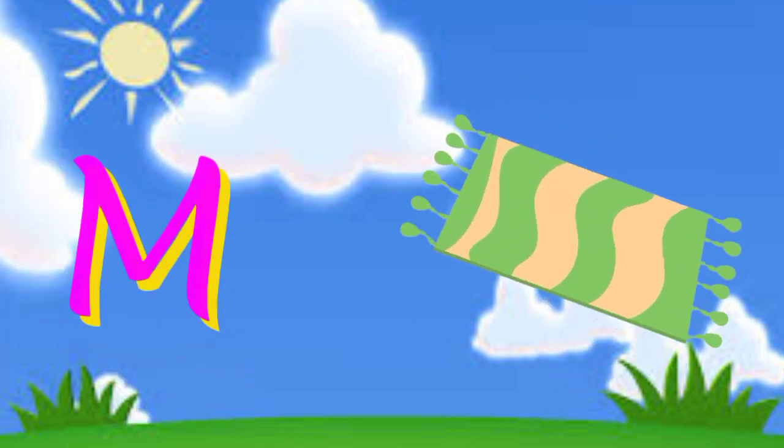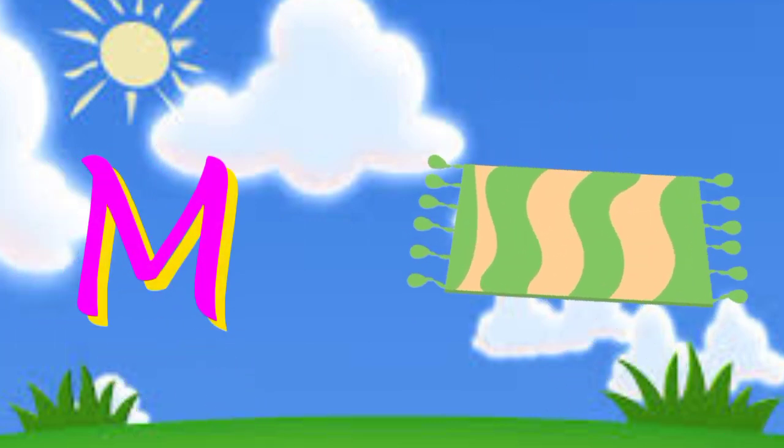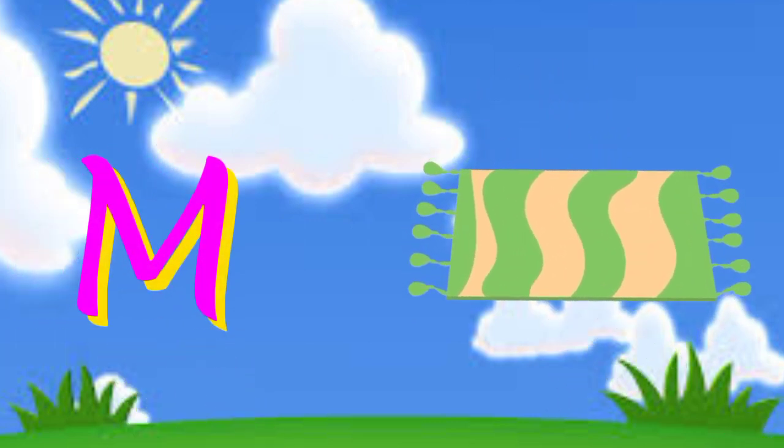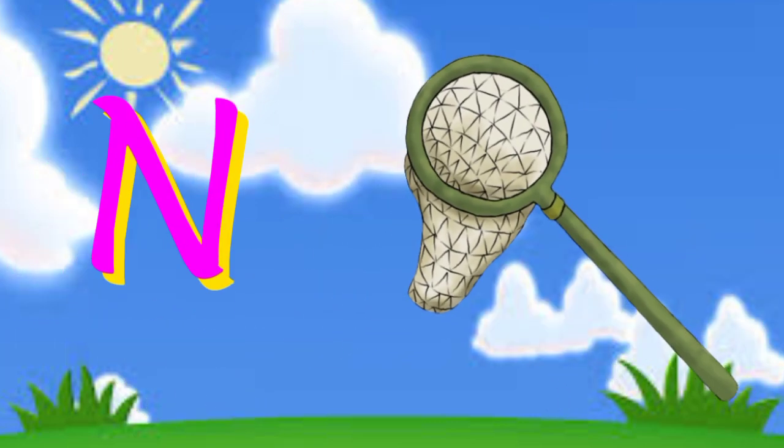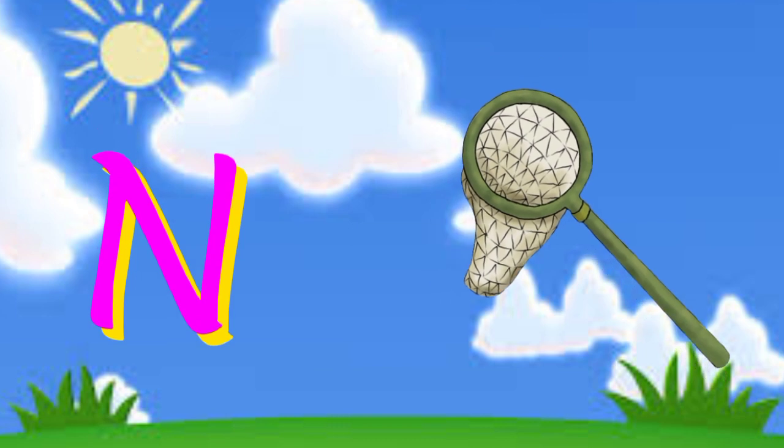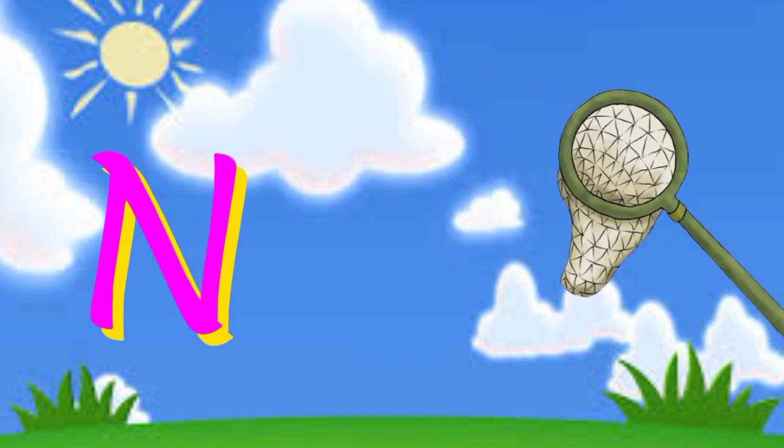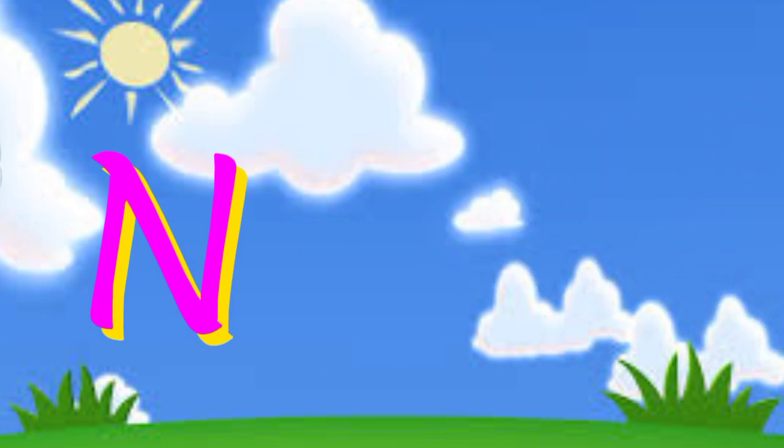M is for mat, m-m-mat. N is for net, n-n-net.